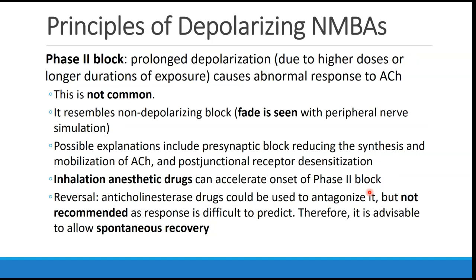There is an effect called phase 2 block, which occurs only with depolarizing neuromuscular blocking agents. This occurs when there is prolonged depolarization due to high doses or long durations of exposure, and it causes an abnormal response to acetylcholine. This is not common. When it occurs, it looks like a non-depolarizing block — you'll see fade with peripheral nerve stimulation. The mechanism isn't fully understood, but explanations include presynaptic block reducing synthesis and mobilization of acetylcholine, or postjunctional receptor desensitization. This phenomenon is accelerated in the presence of inhalational anesthetic drugs.